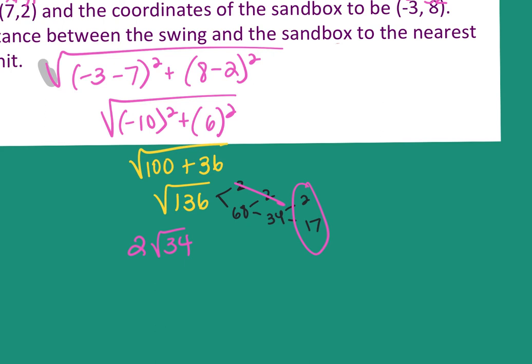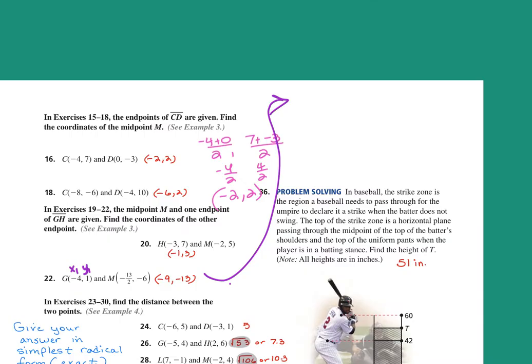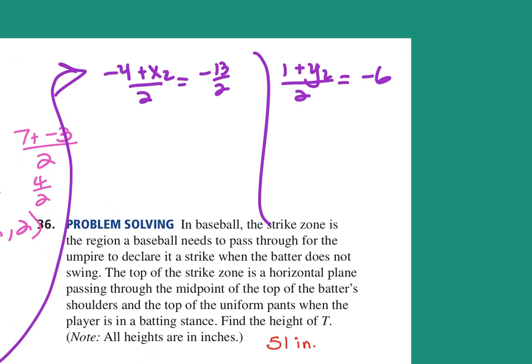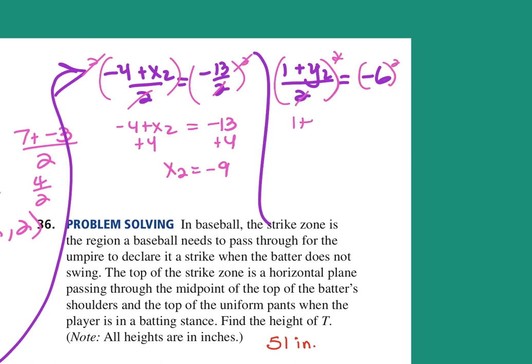For number 4, I did something different. This is my x of my midpoint, and this is the y of my midpoint. So, -4 plus x2 over 2 equals -13 halves. And 1 plus y2 over 2 equals the y coordinate, which is -6. So then I'm going to multiply 2 on both sides. It cancels on the left, and it also cancels on the right with the denominator. So I end up with -4 plus x2 equals -13. Add the 4. And x2 equals -9. On the right, you're going to multiply by 2 and multiply by 2. The 2s cancel here. 1 plus y2 equals -12. Subtract the 1, and y2 equals -13.